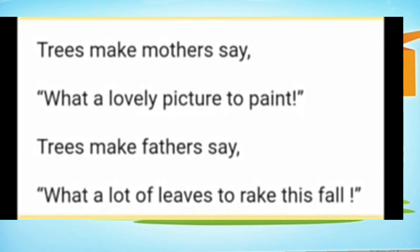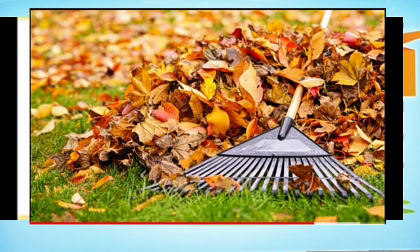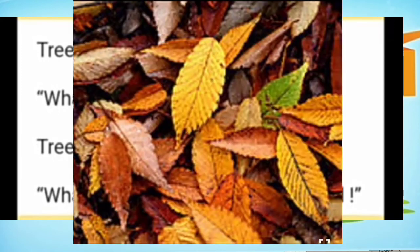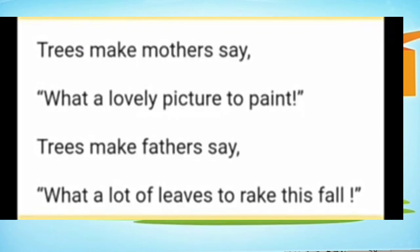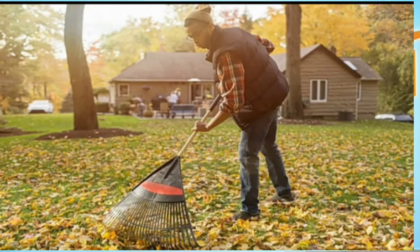Trees make father say 'What a lot of leaves to rake this fall!' Fall means autumn — in America, autumn season is called fall. During autumn, the trees shed their leaves, so under the trees there will be a lot of leaves. It is the duty of fathers to clean the grounds by collecting all the leaves using a tool called a rake, as you can see in the picture.